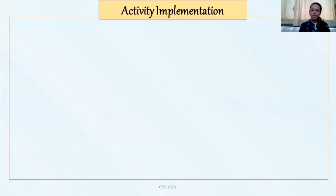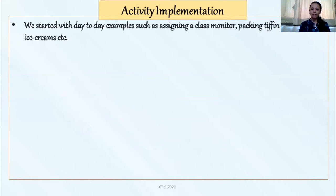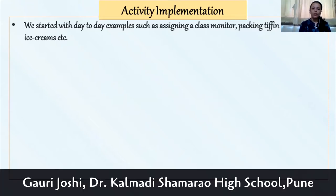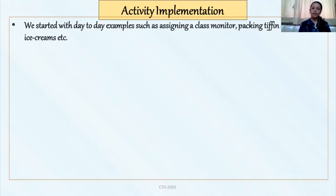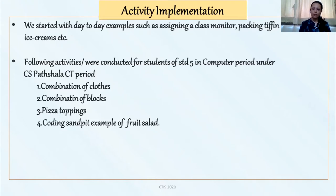As a discussion, we started with the term combinations. We asked the students of standard 5 what they actually mean by the term combinations. Students gave a quick response about mixing of two colors gives a combination of thought. We started with day-to-day examples such as how a teacher is assigning a class monitor, how a mother is packing a lunch box for her child, how the children are buying ice cream. All these examples involved combinations. Now we came across the examples which were included in CS Pathshala curriculum and also in a book called Coding Sanctuary.